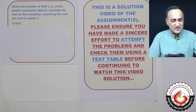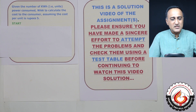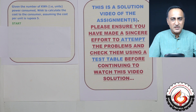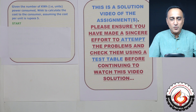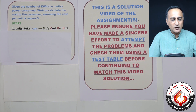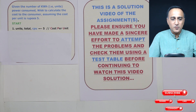The first step is start. Next, identify the variables required: one variable called units, one variable called CPU which stands for cost per unit, and one for the bill amount or total. So we have units, total, and cost per unit which is five.